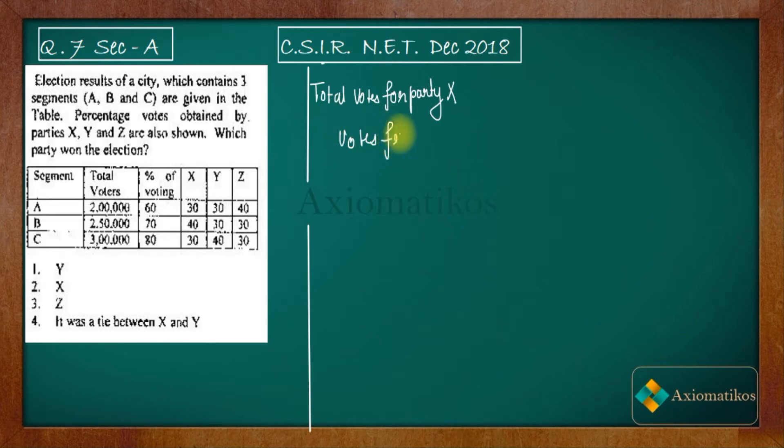Now see, votes from segment - this thing will be equal to votes from segment A plus votes from segment B plus votes from segment C.